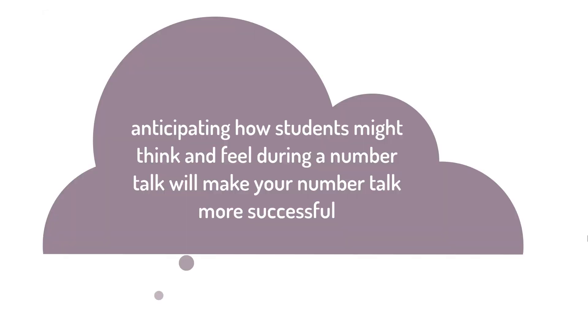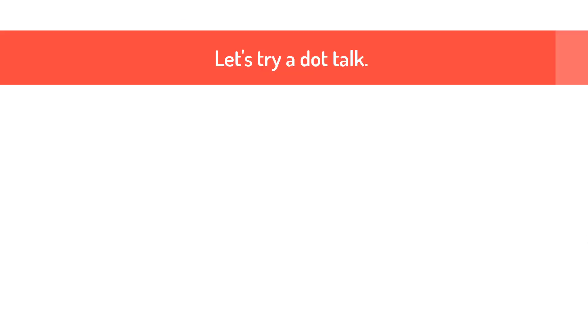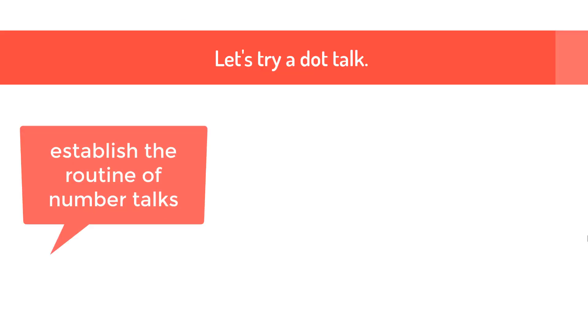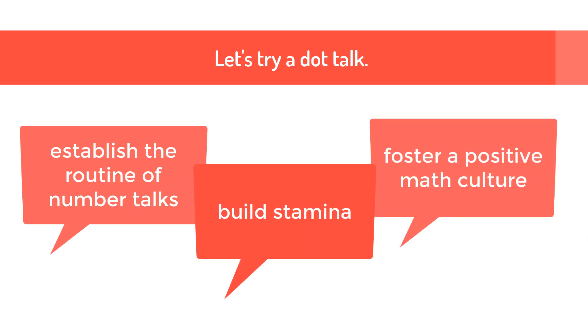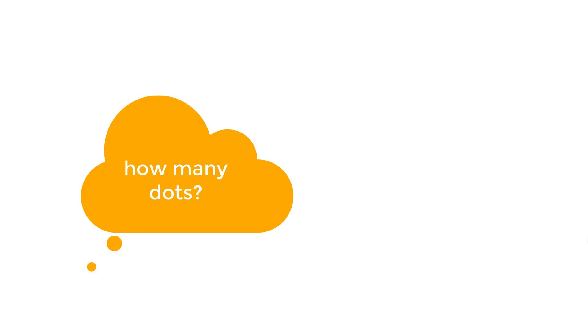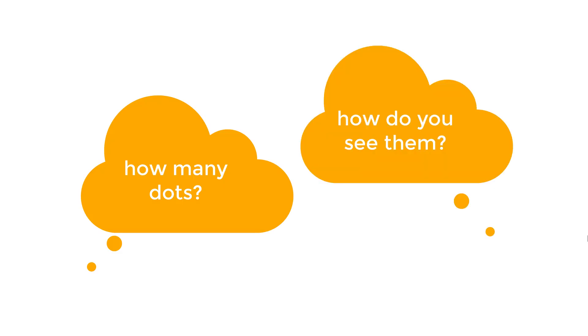We're going to try a Number Talk now so you can feel how it feels for students. We're going to begin with something called a dot talk. A lot of people start with a dot talk to establish the routine and build student stamina, and also to experience that quiet think time and to build the understanding that various strategies are valuable. So I'm going to show you an image — just for a few seconds — and I want you to think about how many dots you see and how you see them.